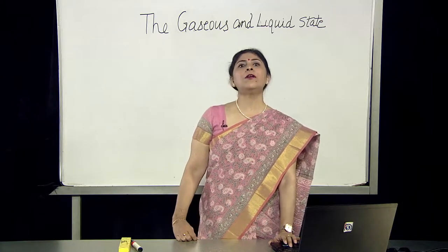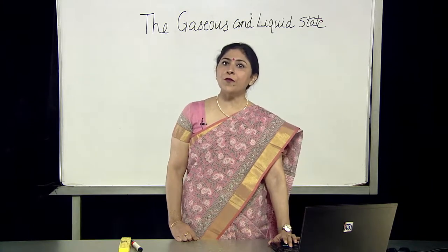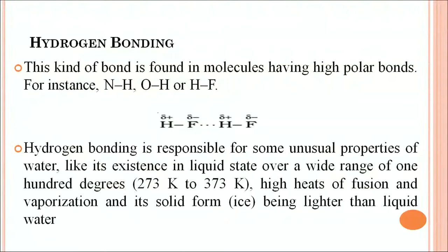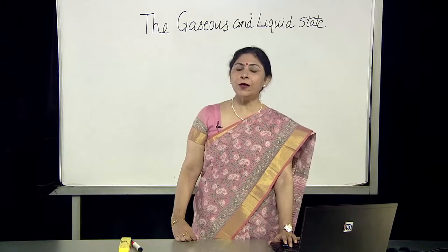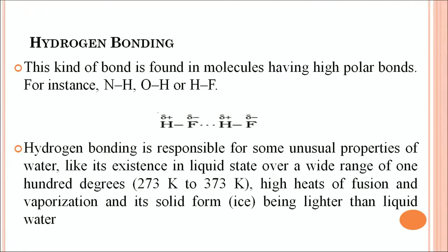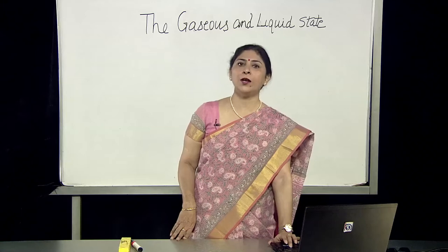Now we move on to hydrogen bonding. This kind of bond is found in molecules having high polar bonds, for instance nitrogen-hydrogen, oxygen-hydrogen, and hydrogen-fluorine. The atoms which are more electronegative in nature will form hydrogen bonds with hydrogen. Hydrogen bonding is responsible for some unusual properties of water, like its existence in liquid state over a wide range of 100 degrees (273 Kelvin to 373 Kelvin), high heats of fusion and vaporization, and its solid form - ice - being lighter than liquid water.